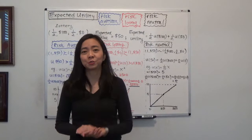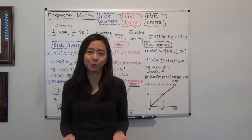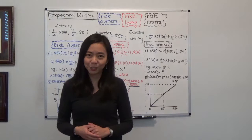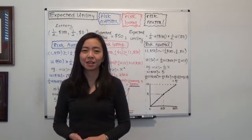Economists use expected utility to describe your welfare under uncertainty. For example, if you're buying a lottery, there's a chance that you win and a chance that you don't. Or when you're trying to park at an unauthorized area, there's a chance you get towed and suffer a loss, but also a chance that nothing happens. There are a lot of situations under uncertainty, and we economists use expected utility to describe this kind of situation.